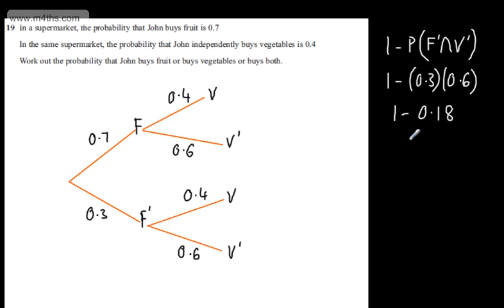0.18 from 1 is going to give me 0.82. So that's the probability now that John buys fruit or buys veg or buys both. I've just done 1 minus the probability that he buys neither.